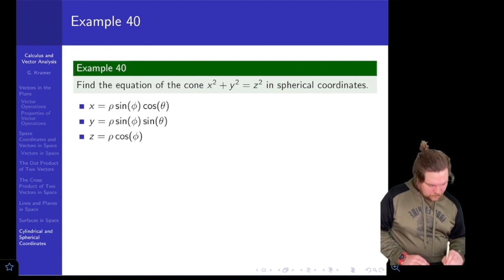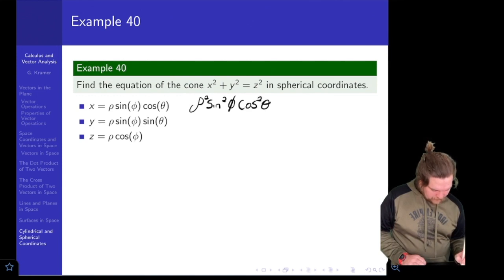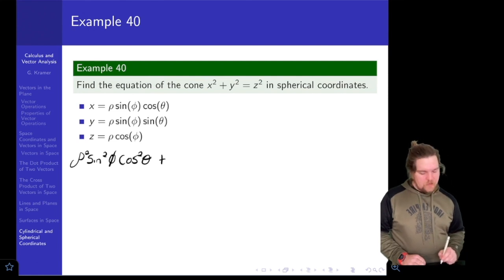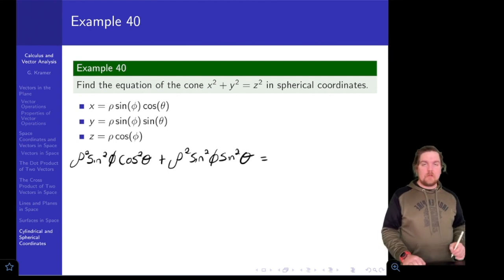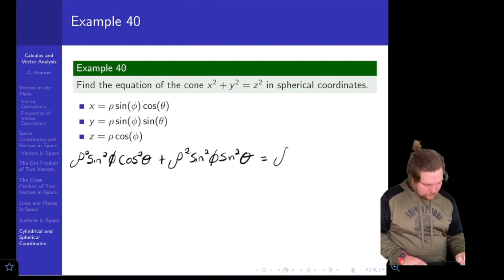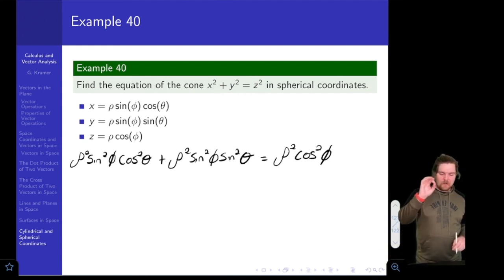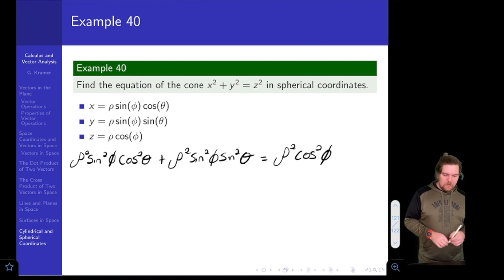Replacing x with rho·sin(phi)·cos(theta), y with rho·sin(phi)·sin(theta), and z with rho·cos(phi), the equation x²+y²=z² becomes: rho²·sin²(phi)·cos²(theta) + rho²·sin²(phi)·sin²(theta) = rho²·cos²(phi). We can divide through by rho squared, leaving sin²(phi)·cos²(theta) + sin²(phi)·sin²(theta) = cos²(phi).